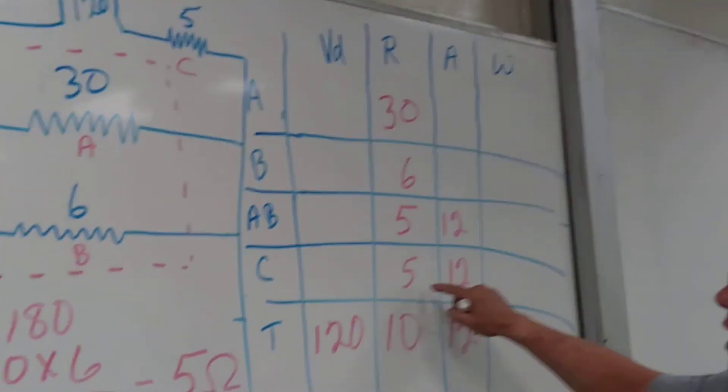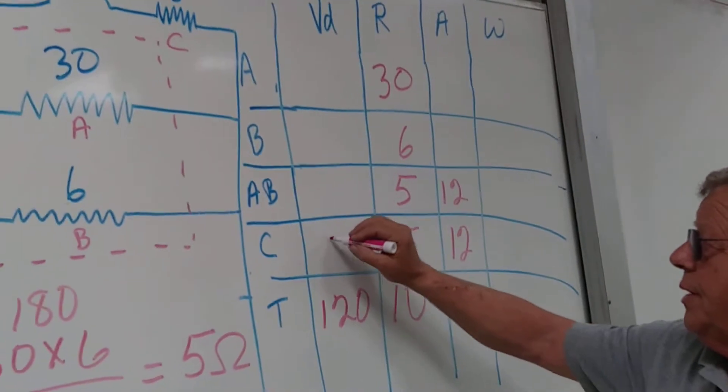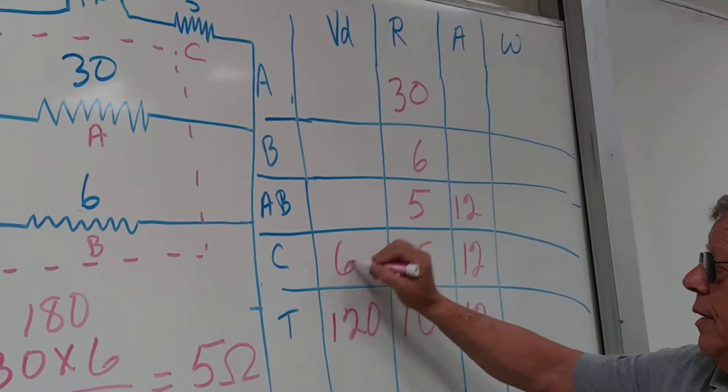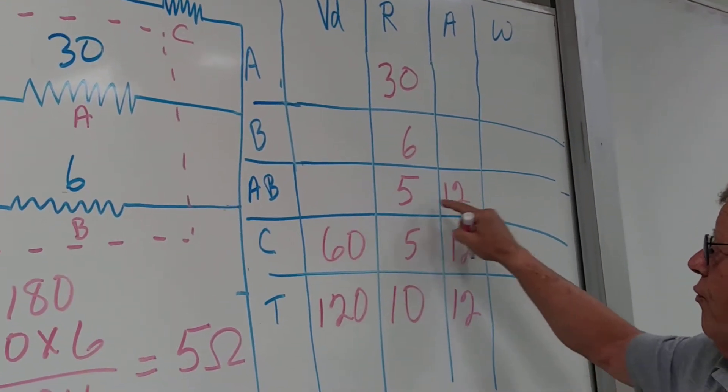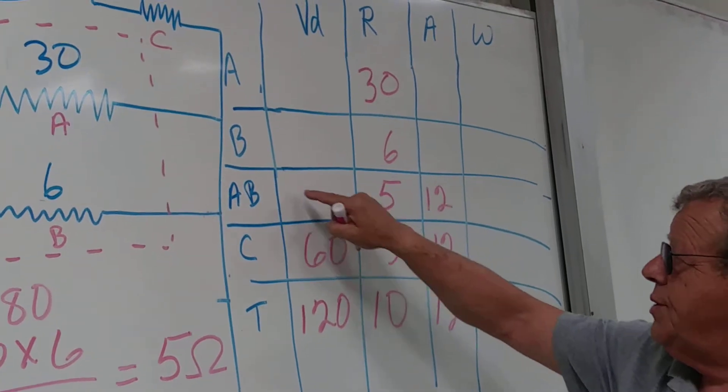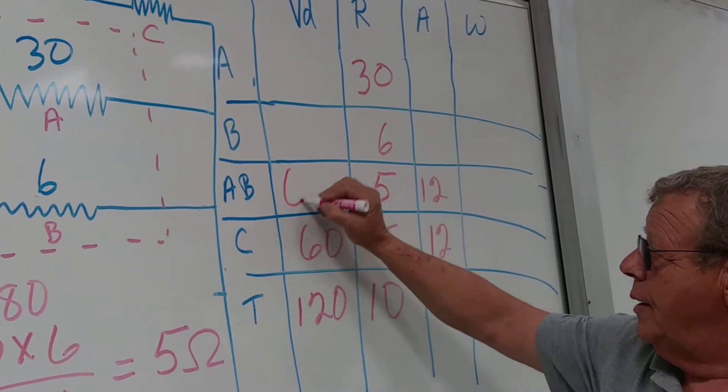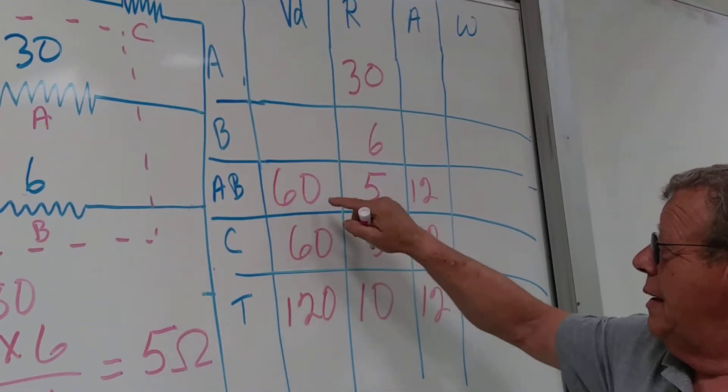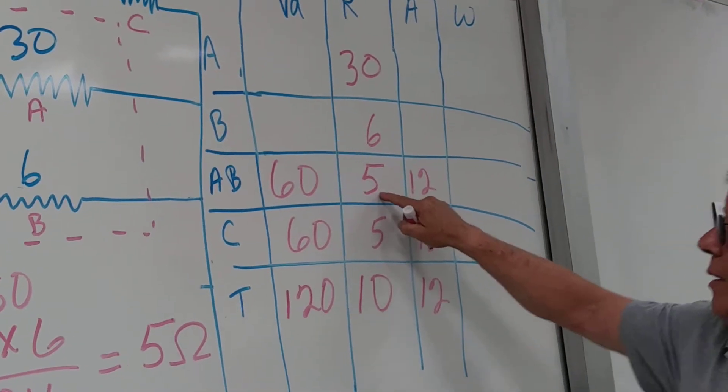5 times 12 equals? 5 times 12 equals? That's A and B combined. Okay.